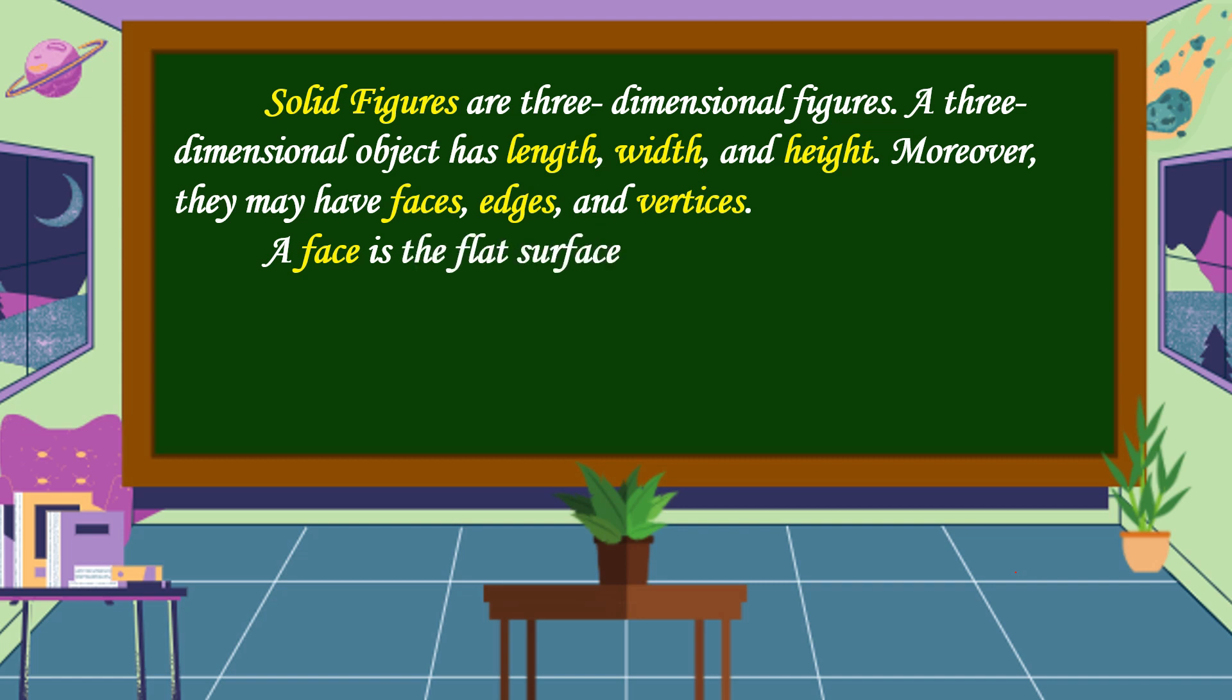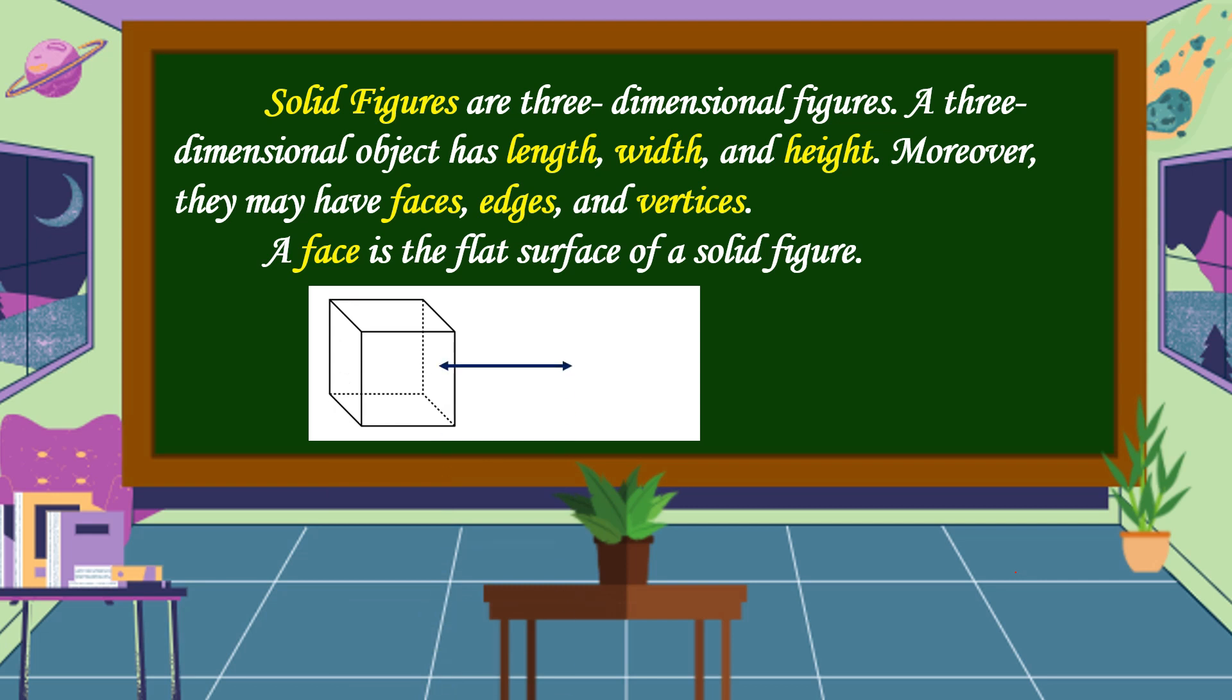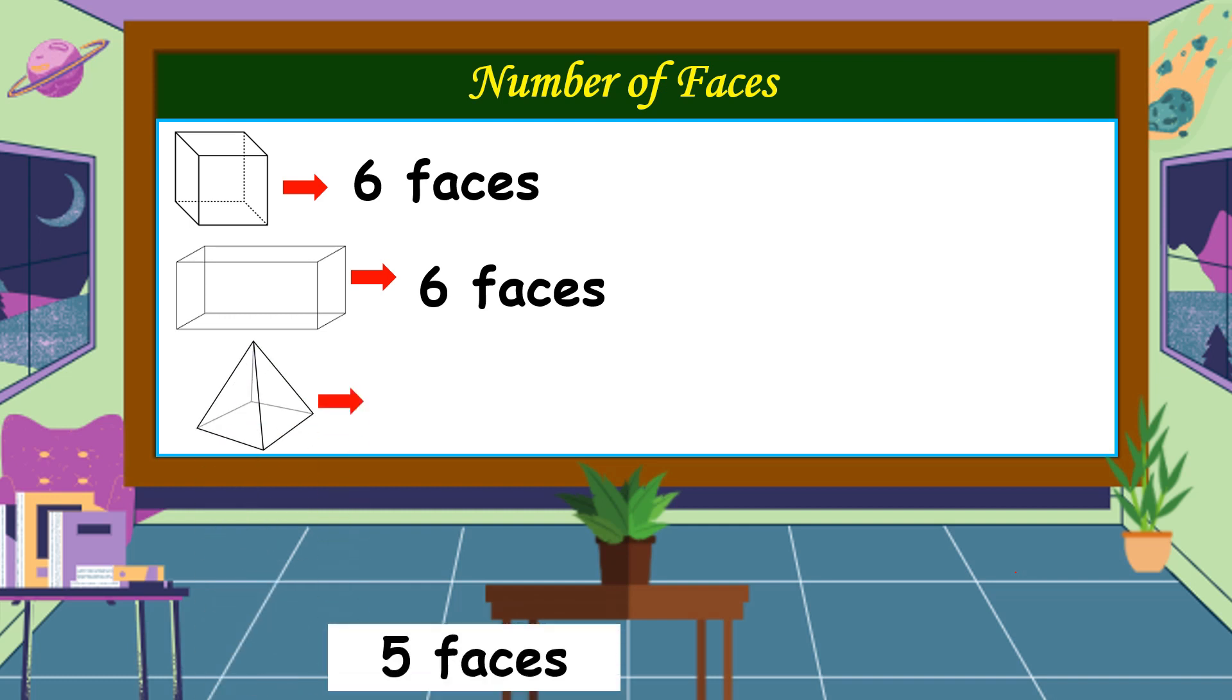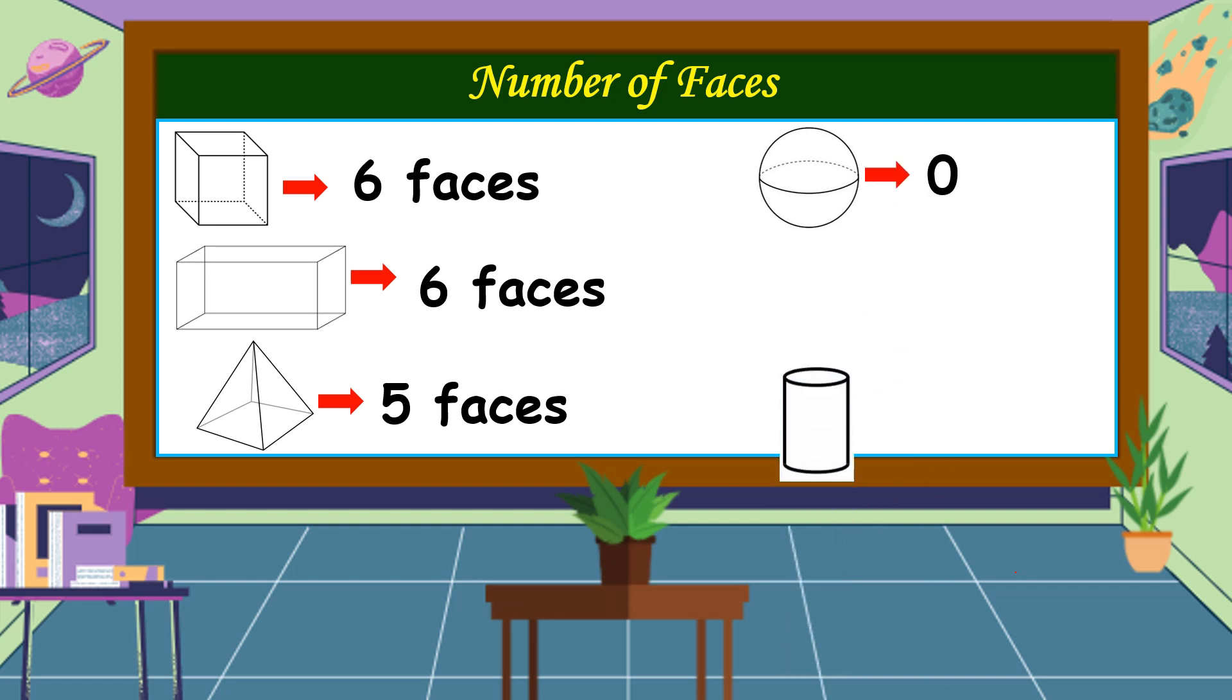A face is the flat surface of a solid figure. This is the face. Let's count the number of faces of some solid figures. A cube has six faces. A rectangular prism has six faces, too. A pyramid has five faces. A sphere is zero. A cylinder has two faces. And a cone has one face.